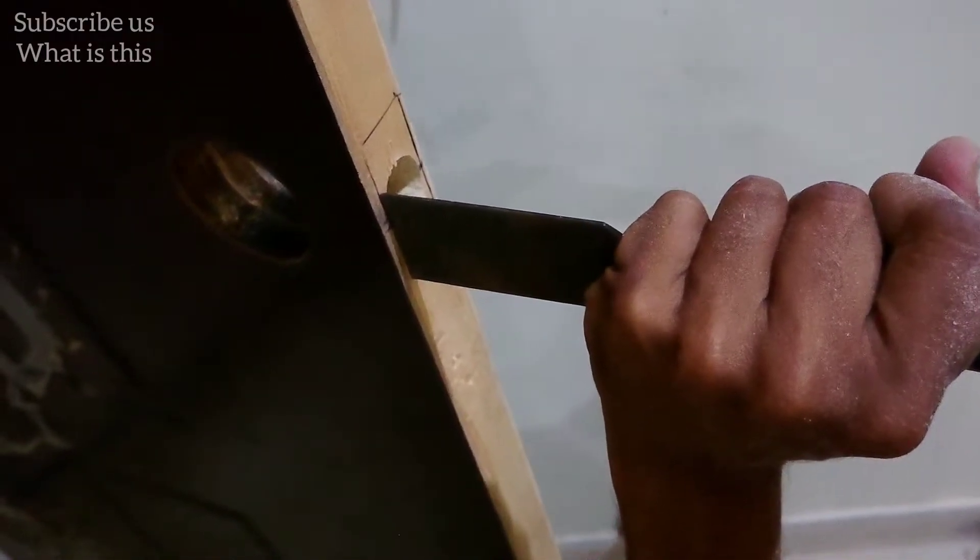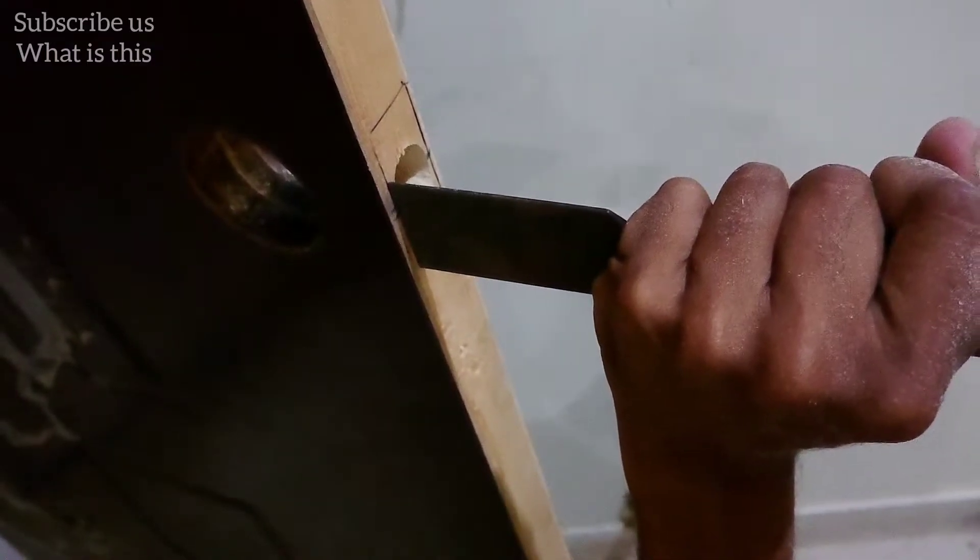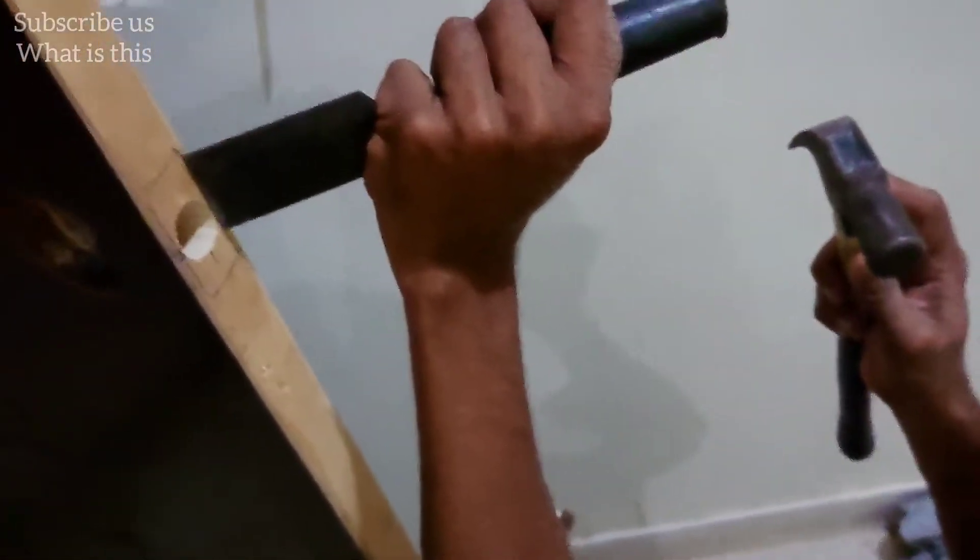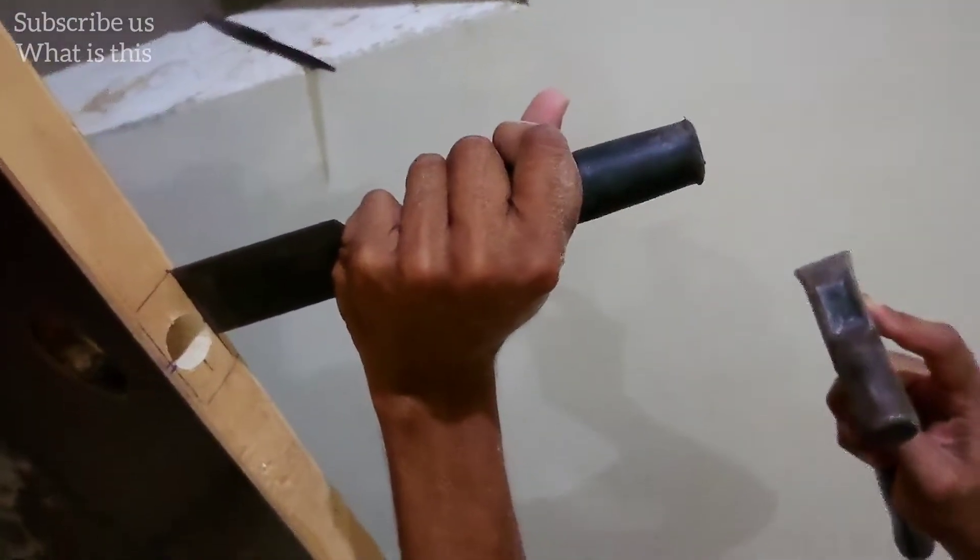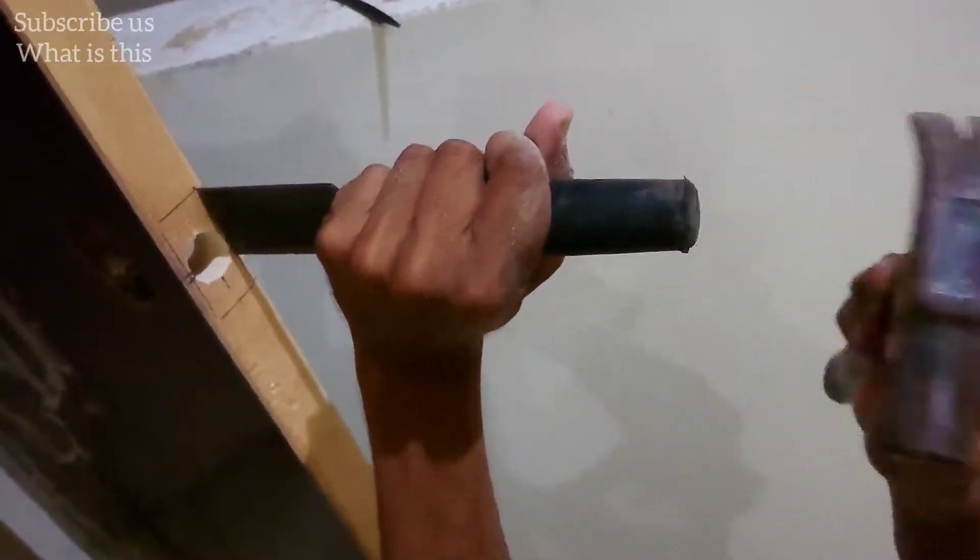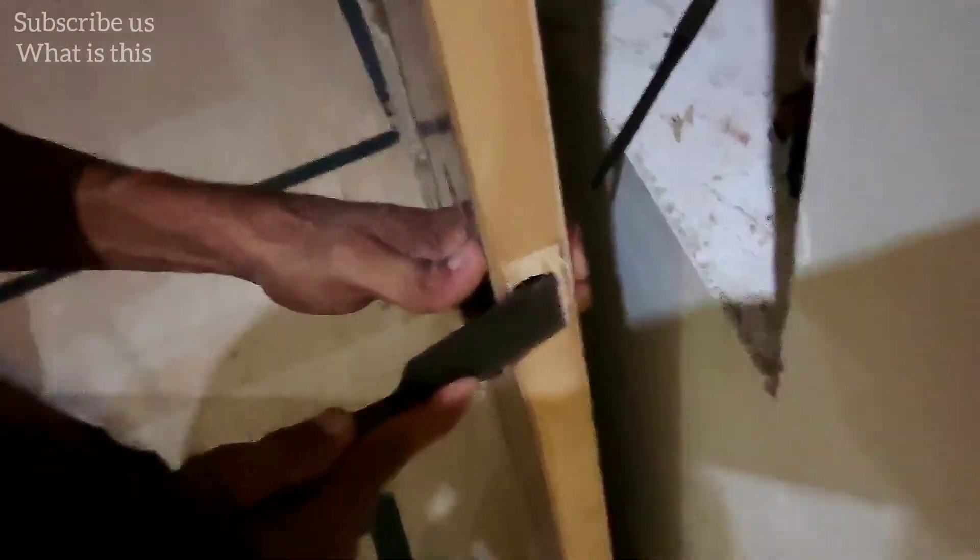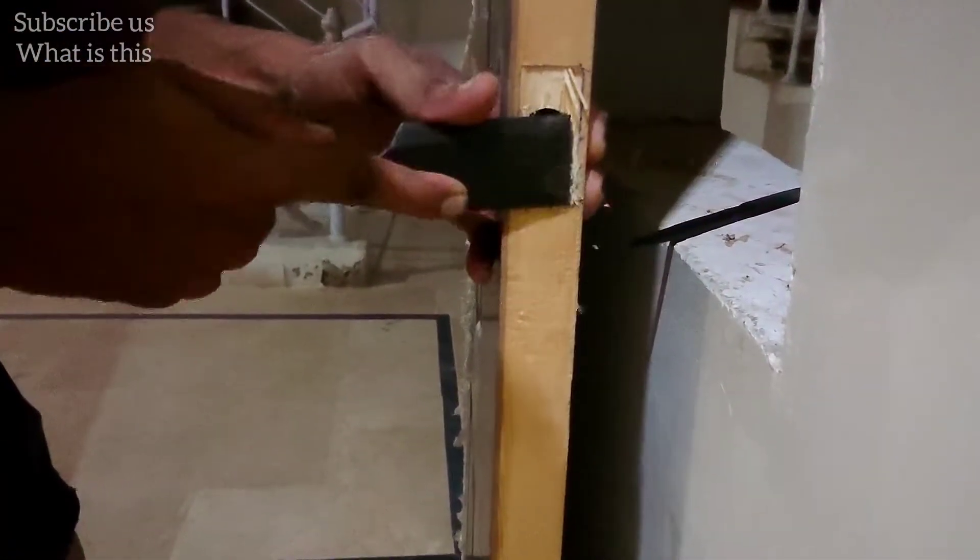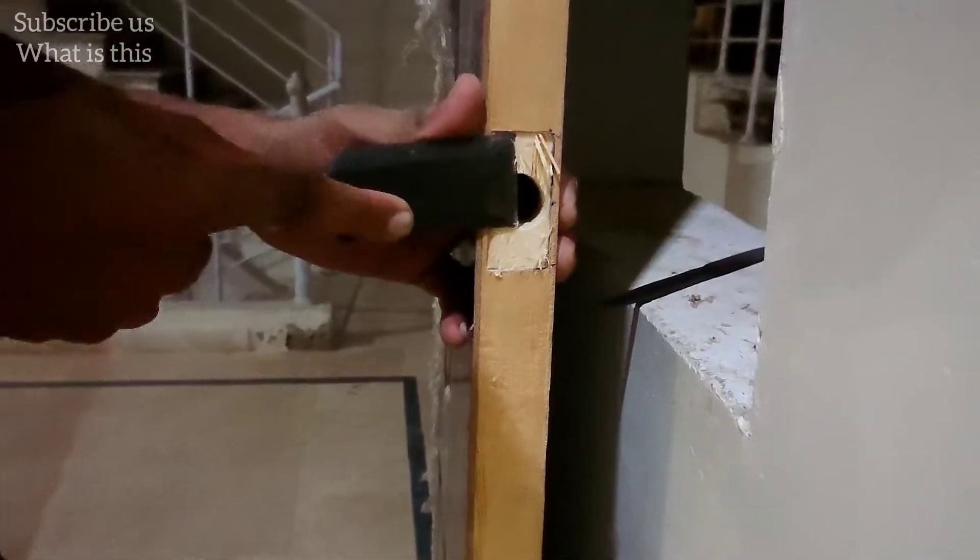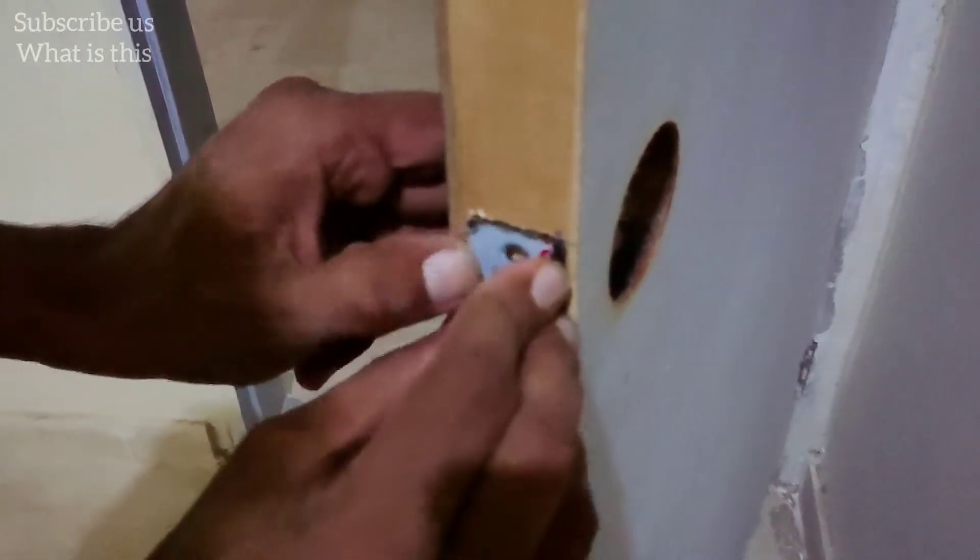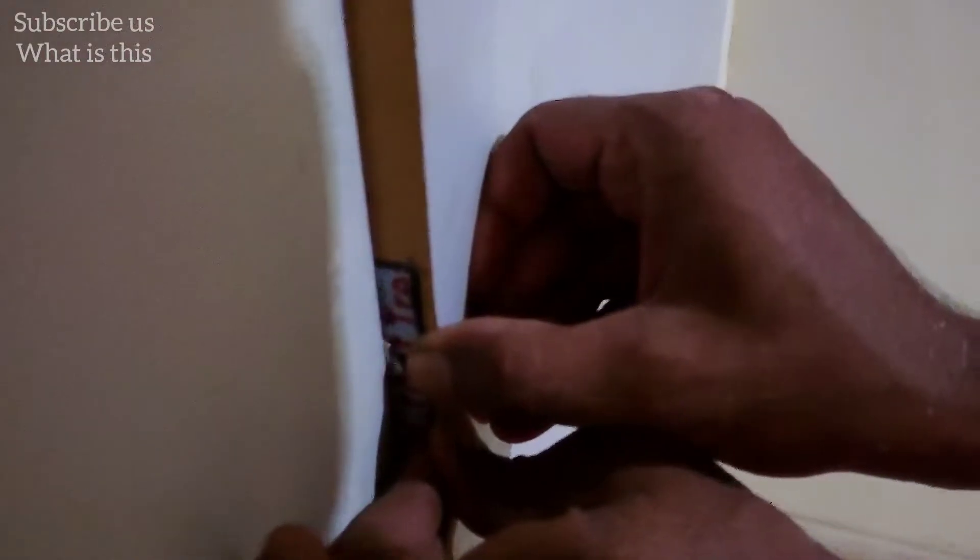We will level the surface with the lock plate so the plate and the wood will be in the same level. Look at this. What a finishing in my hand. That's perfect. Look perfect now. Look at the finishing.